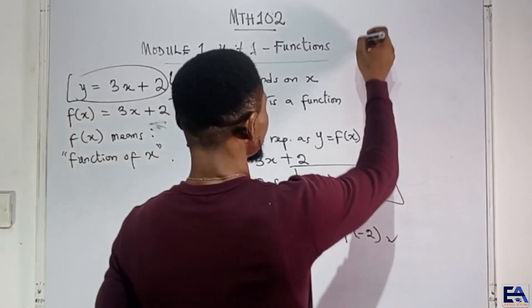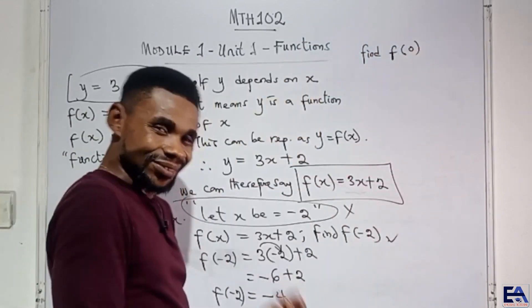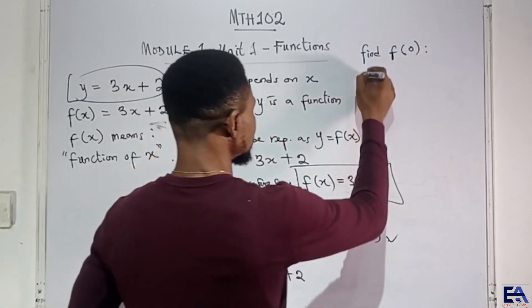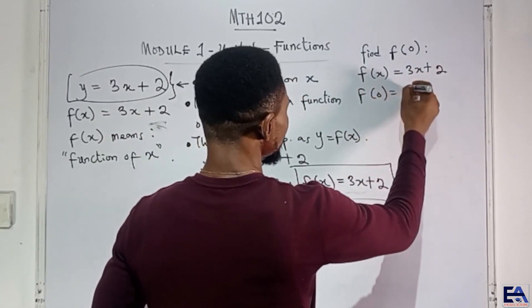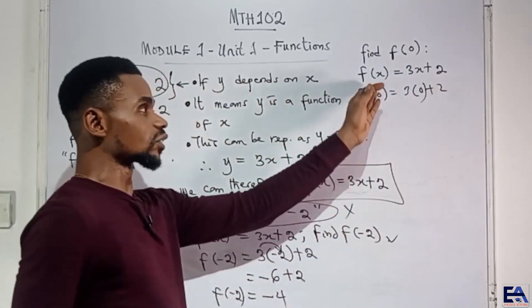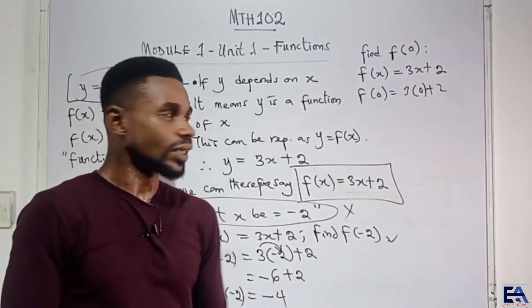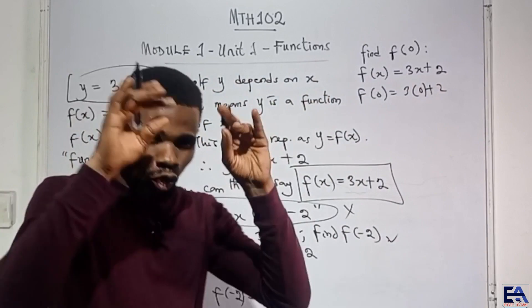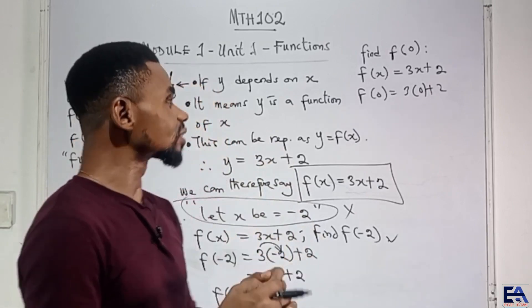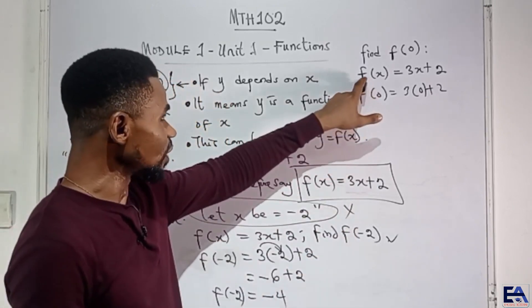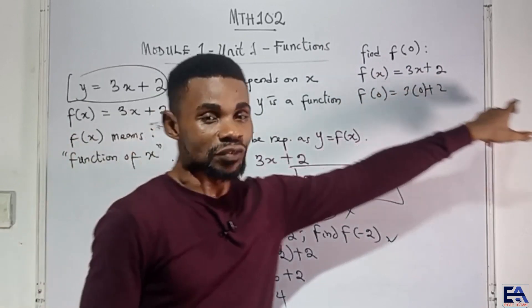If this question says find f of 0, no problem, still the same thing. Since we know that f of x is equal to 3x plus 2, then it means f of 0 equals 3 times 0 plus 2. That is, anywhere we see x, we put 0 there. As a matter of fact, it only looks complex, but it even makes the whole thing easier. If you follow it with your mind and you try to just understand the concept, you will see that it is easier. If f of x is this, f of 0 means anywhere you find x, it means x has been replaced by 0 here. It should be replaced by 0 everywhere else. Simple.